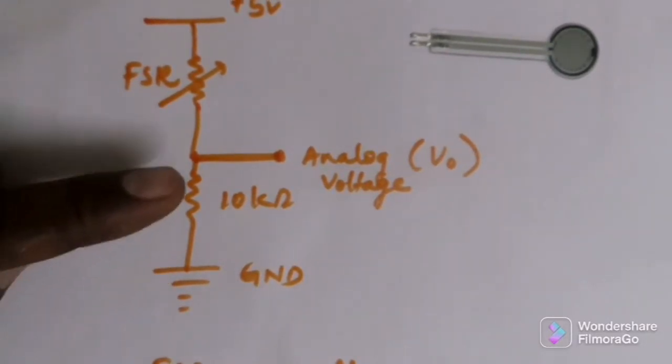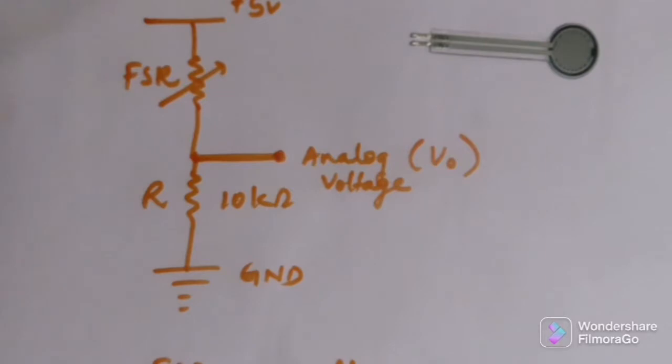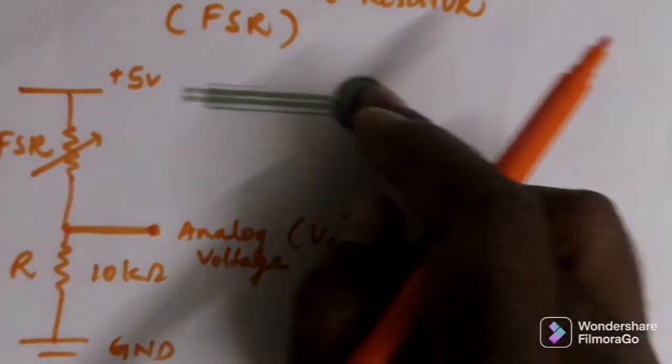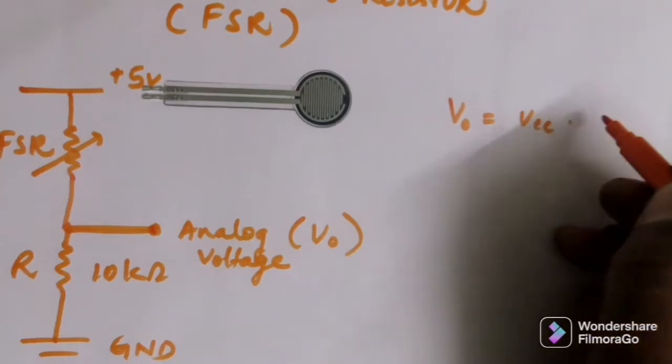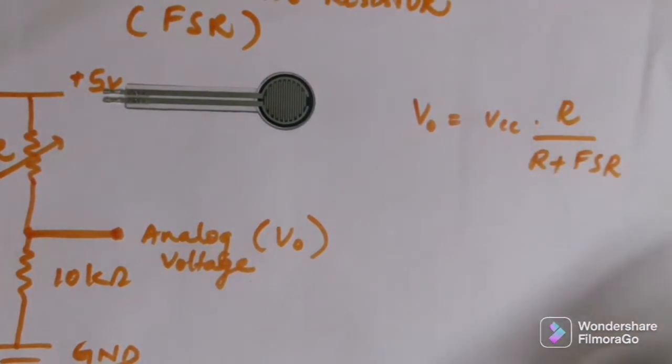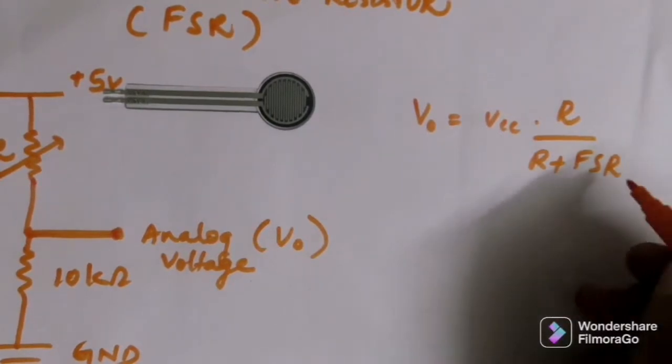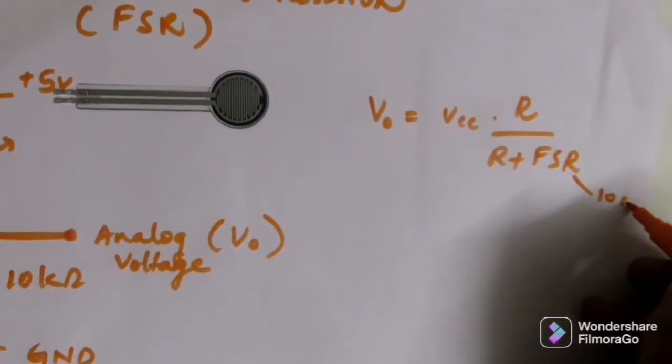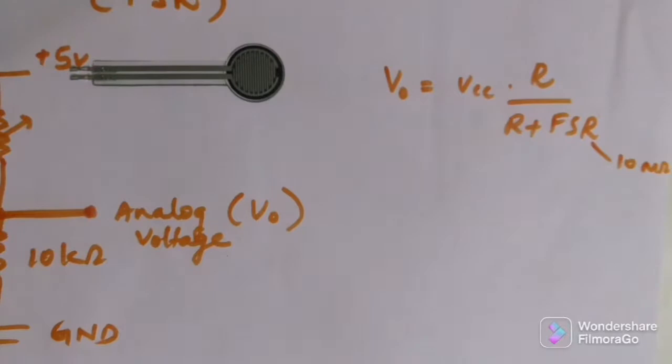So there is a voltage divider formula we have to use. V-naught is equal to VCC into R divided by R plus FSR. As I said, FSR is very high, around 10M ohms. So the voltage increases with increasing the force.